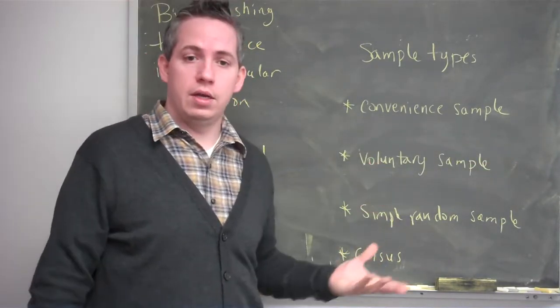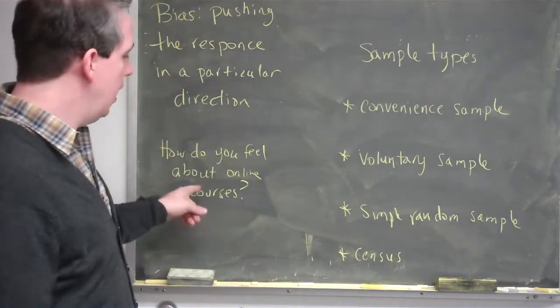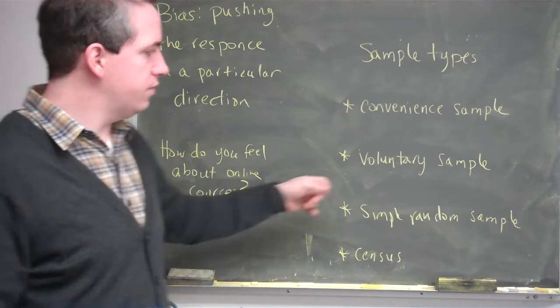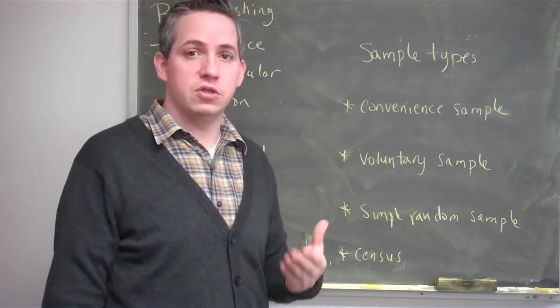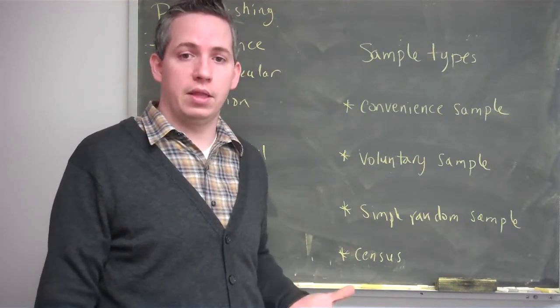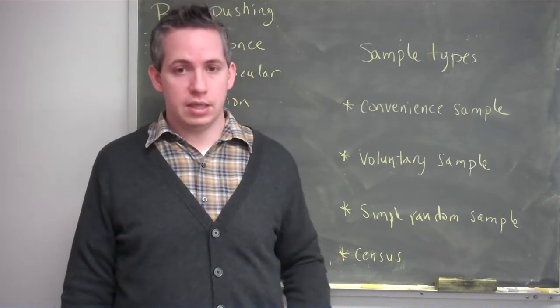Voluntary sample is when I go out and ask volunteers, so people actually volunteer their responses. With online courses it's difficult to say why voluntary samples would have bias, but as soon as you have a voluntary sample, it automatically has bias. Because people who volunteer their answers automatically have something in common.